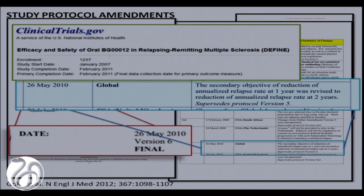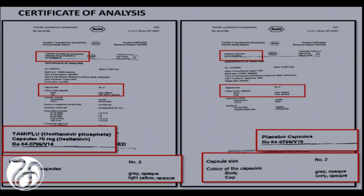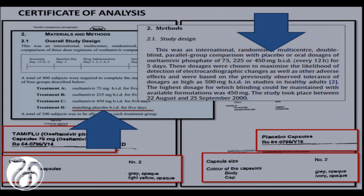Clinical study reports may also contain certificates of analysis, which are authenticated documents certifying the constituents, quality, and purity of the products being tested. In this example, we have a record of the appearance of Tamiflu and placebo capsules. The Tamiflu capsule had a light yellow cap, but the placebo had an ivory-colored cap. These details are neither present in the journal publication nor in the body text of the clinical study report, both of which call the placebo matching.